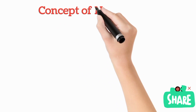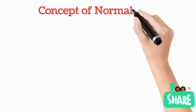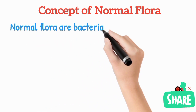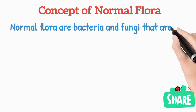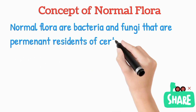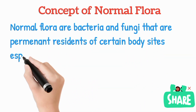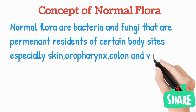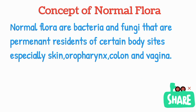Now we will discuss the concept of normal flora. Normal flora are bacteria and fungi that are permanent residents — they are permanently part of some body parts, like they are present on the skin, in the oropharynx region, in the colon, and they may also be present in the vagina. These are the common sites of normal flora.